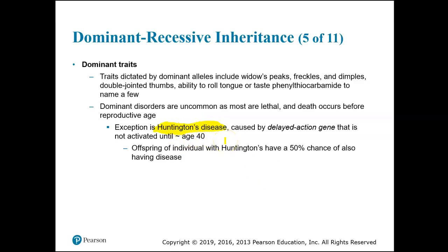Huntington's disease is caused by a delayed action gene. The gene responsible for Huntington's is not activated until a person is about age 40. Because of that, many times they've already had children — this is after childbearing age. That is the reason why we still see people who have it.